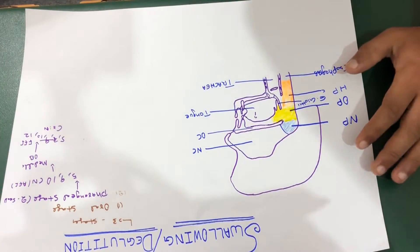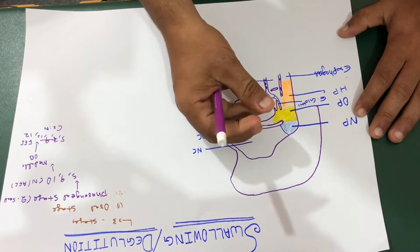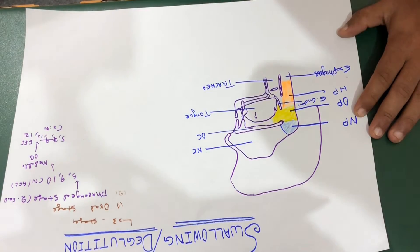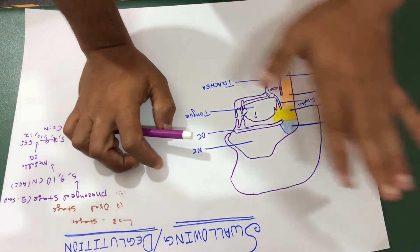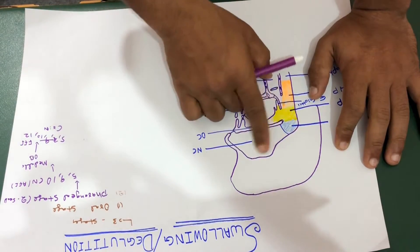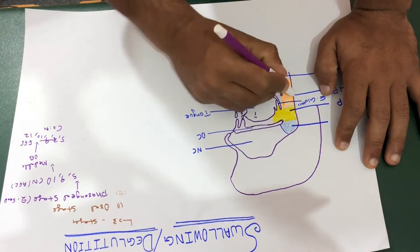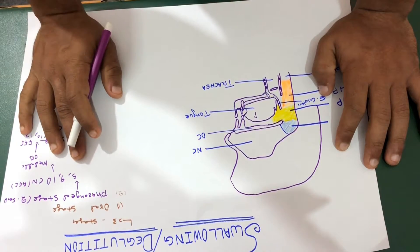What happens as the bolus moves backward: the soft palate is actually pulled upwards to close posterior nares and prevent reflux of food back into your nasal cavity.